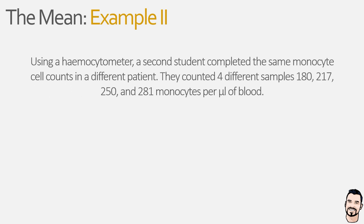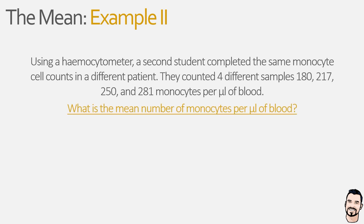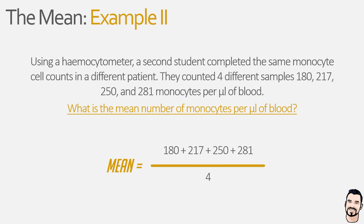Now let's have a look at a second example. Here we have a second student repeating the same experiment but with a different patient's blood sample. This student only managed to complete four cell counts, identifying 180, 217, 250 and 281 monocytes per microlitre. The student wants to know the mean number of monocytes per microlitre for this patient. Just like our first example, we start with our equation, which is then substituted with data from the experiment. Notice how our x value on the top of the equation has only four data points, meaning the n value on the bottom is equal to 4 and not 5 as we saw previously.